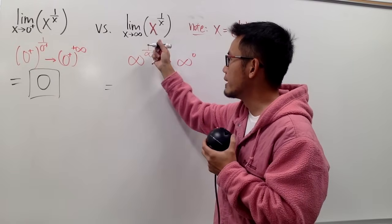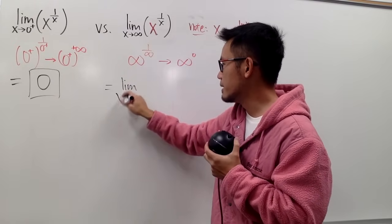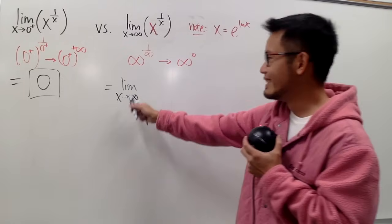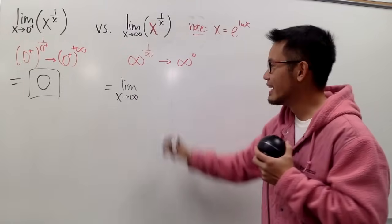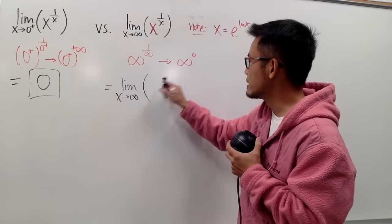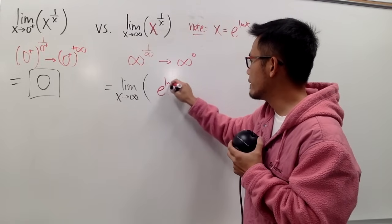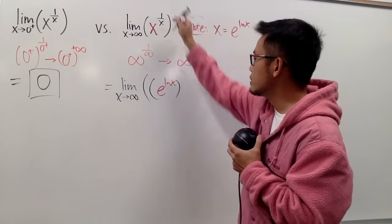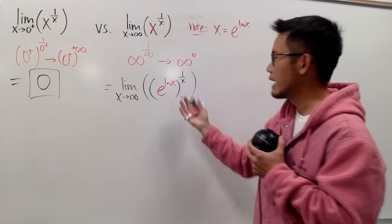So, this is the work that we'll do. First of all, let me just write down here is the limit. Yes, we have to write down limit every single time, right? The limit as x goes to infinity. And now, the x is just e to the ln x power, and then you take that, raise to the 1 over x power, like this.